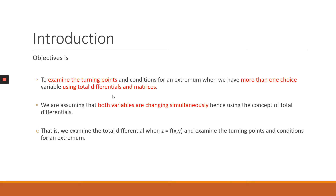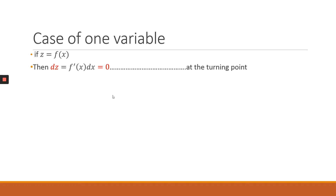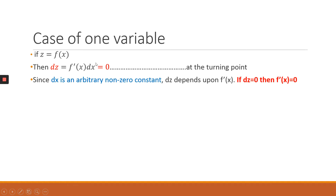That is why we need to introduce total differentials in the analysis. To see how total differentials work, we'll start by applying it to a case of one variable from the previous video. We assume a z function explained by x. If we take a total differential on that z function, we define dz as equal to the first derivative of the f function multiplied by dx. The condition for a turning point is that we set the total differential equal to zero. In this equation, we have two elements multiplying each other: the first derivative of x and dx.